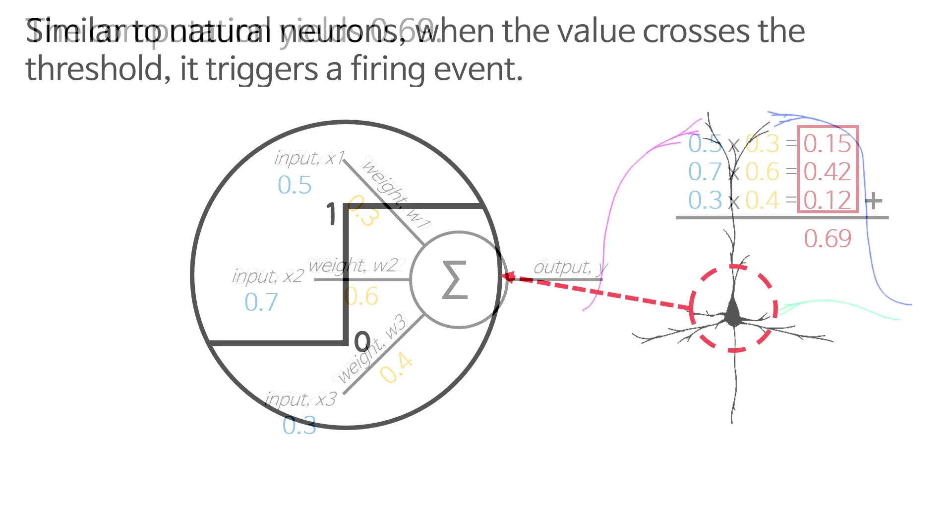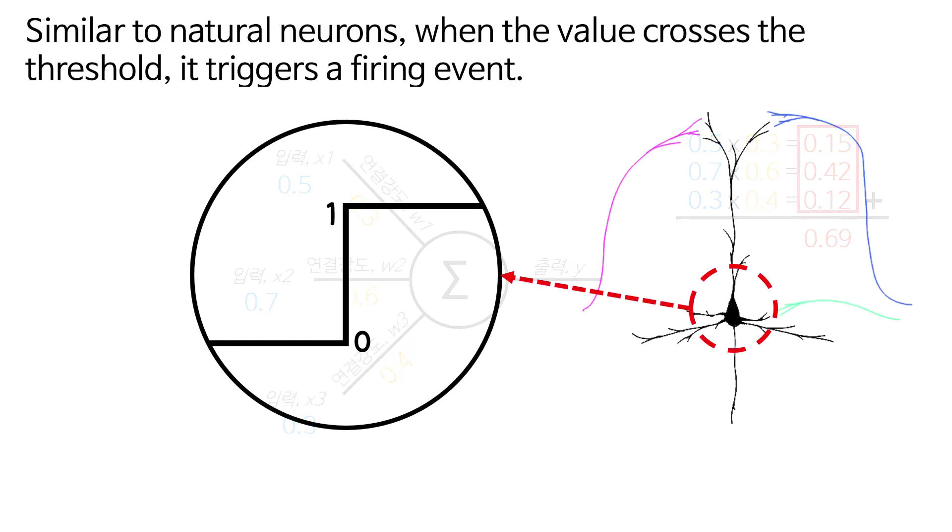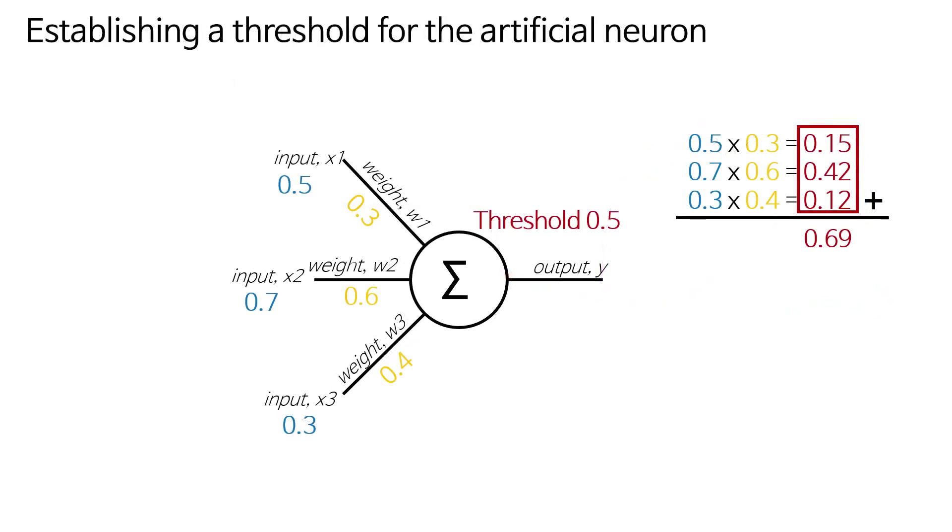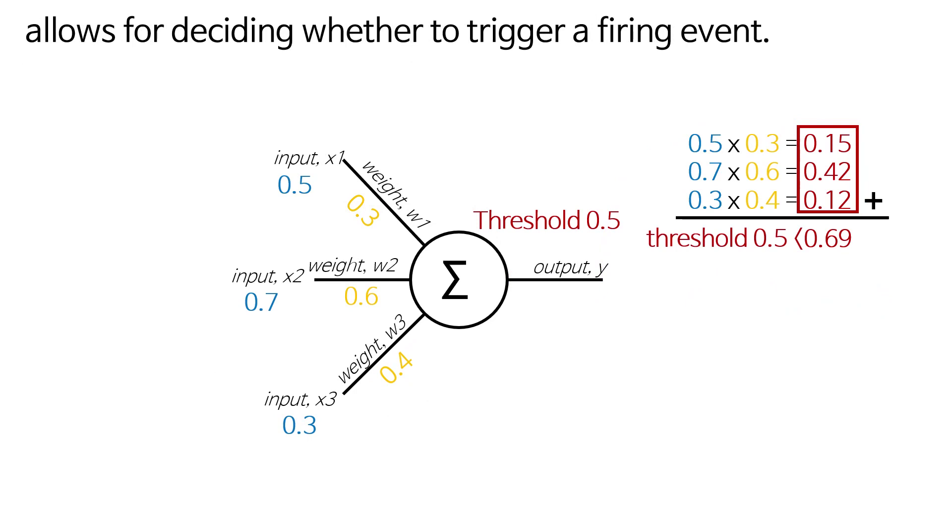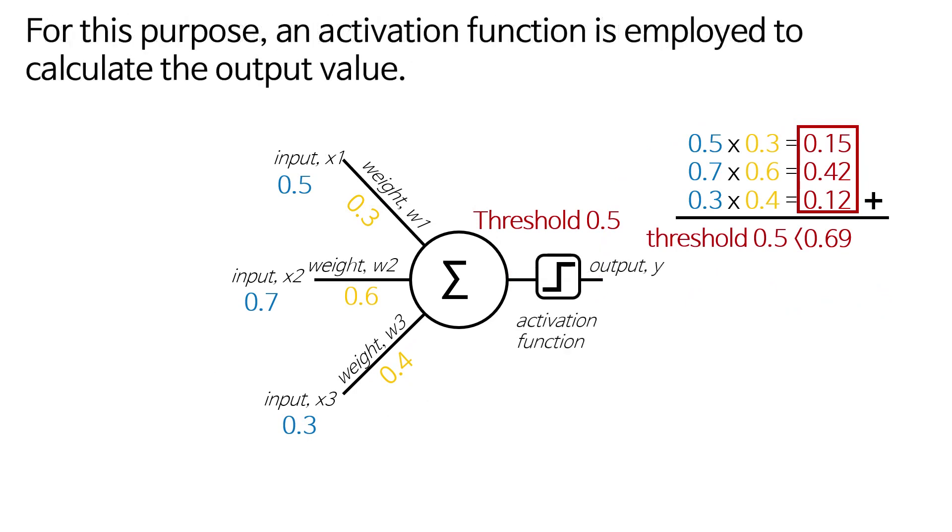Similar to natural neurons, when the value crosses the threshold, it triggers a firing event. Establishing a threshold for the artificial neuron allows for deciding whether to trigger a firing event. For this purpose, an activation function is employed to calculate the output value.